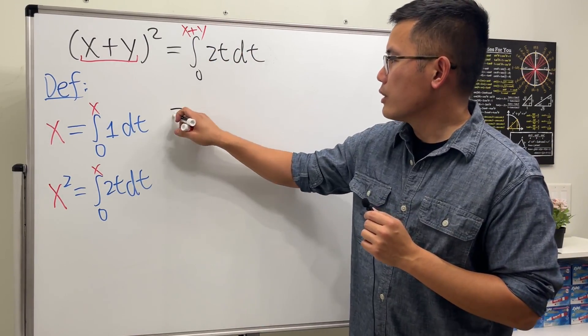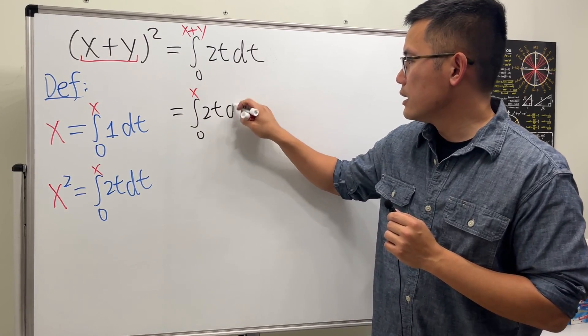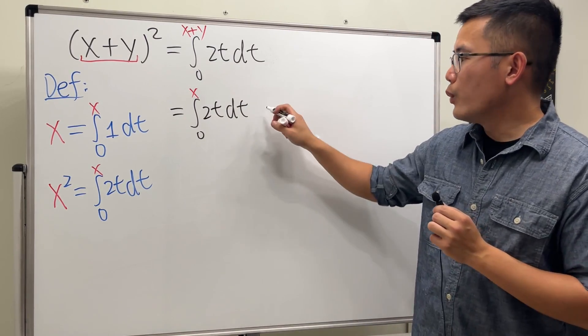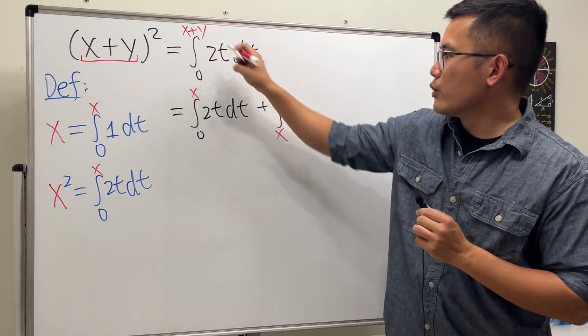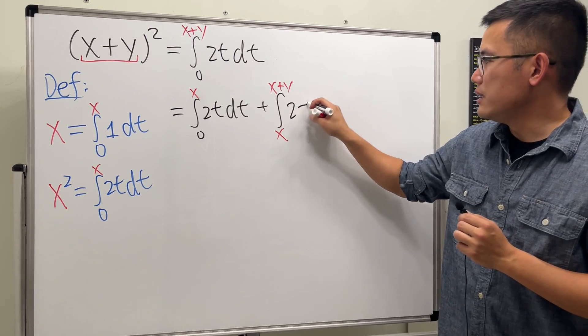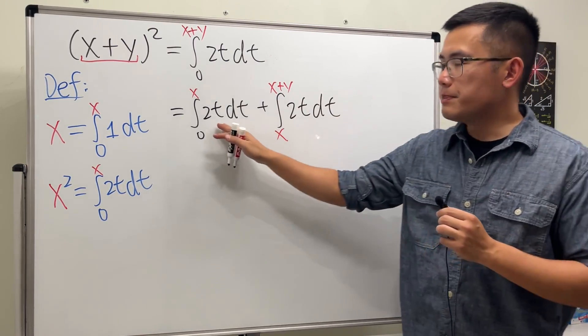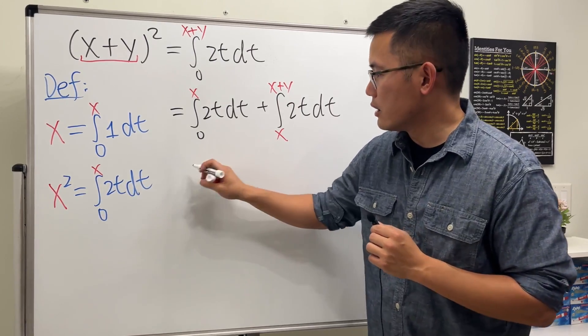How though? Well, this integral goes from 0 to x plus y. Let's separate it. Let's talk about this as the integral going from 0 to x first, and then 2t dt. And then we will have to add, pick this up from x, and then goes to x plus y, and then we have 2t dt. This is perfect because this right here by definition is x square. So that's great.